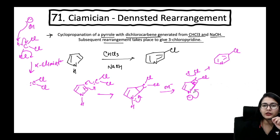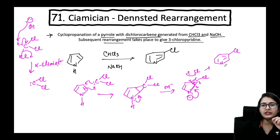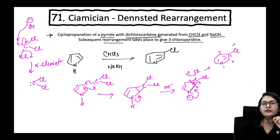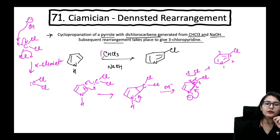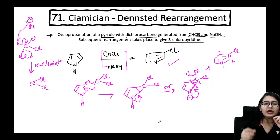Numbering helps understanding: nitrogen is number one, carbon two, carbon three, carbon four. You get a double bond between one and two, a single bond between two and three, and a double bond between three and four. Carbon three carries the chlorine. So starting with CHCl₃ and NaOH on pyrrole, you get 3-chloropyridine.